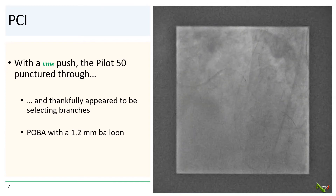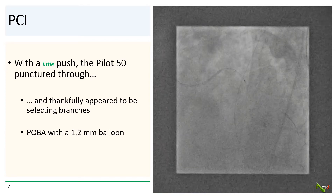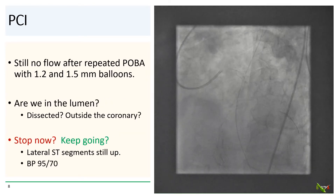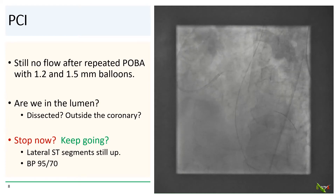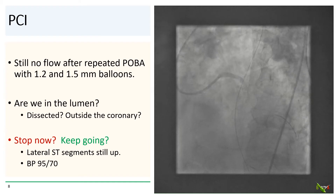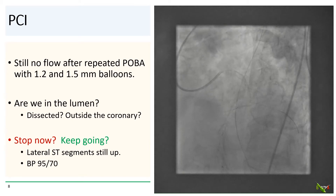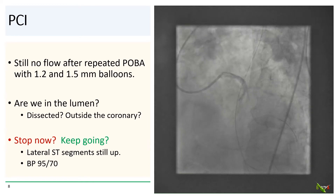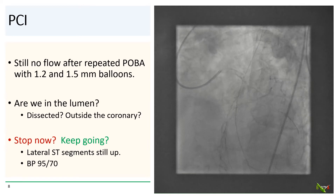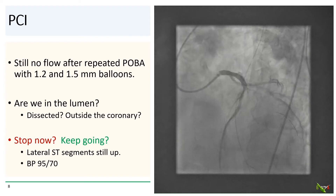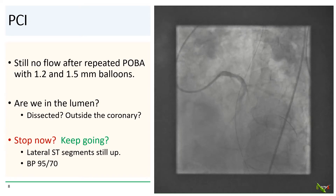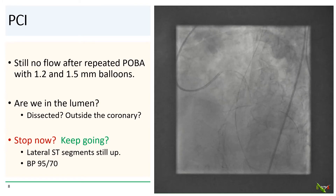We went ahead and gently dilated the proximal part of the diagonal branch with a 1.2 millimeter balloon. Unfortunately, we couldn't get any flow even after repeated POBA with 1.2 and 1.5 millimeter balloons. We were a little bit hesitant about more aggressive dilation because we weren't completely sure whether we were in the lumen. We could not rule out dissection or even the wire being completely outside the coronary.